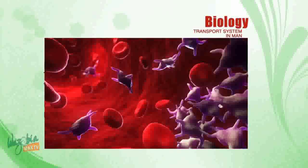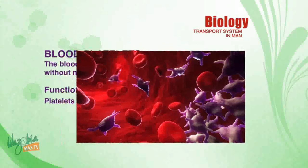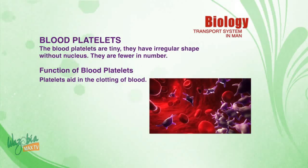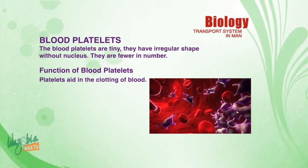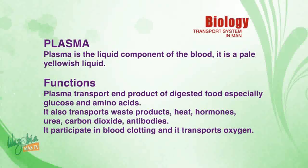Now we move to blood platelets. Blood platelets are tiny, they have an irregular shape, without a nucleus, and they are fewer in number. Function of blood platelets: platelets assist in the clotting of blood.